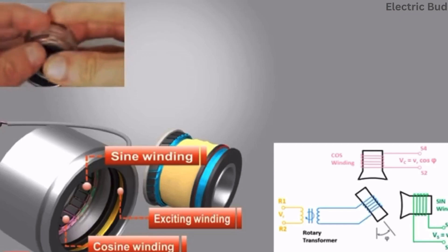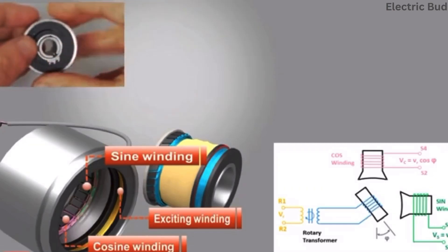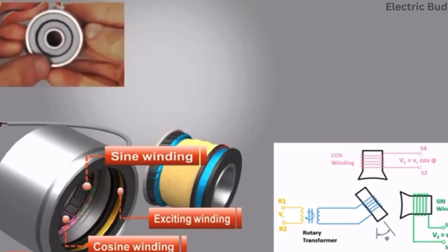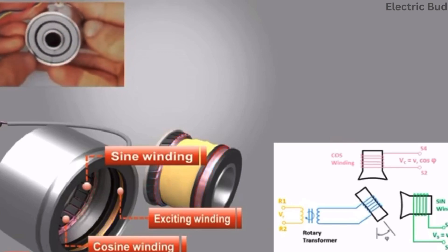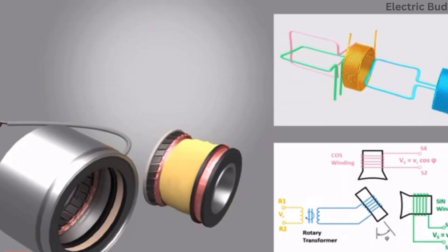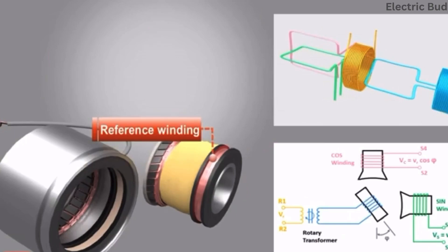This sine signal is transmitted to the rotor winding because the stator's primary winding and the rotor winding act together like a transformer. Furthermore, we can name the rotor winding also as reference winding. The relative magnitudes of the sine and cosine voltage are